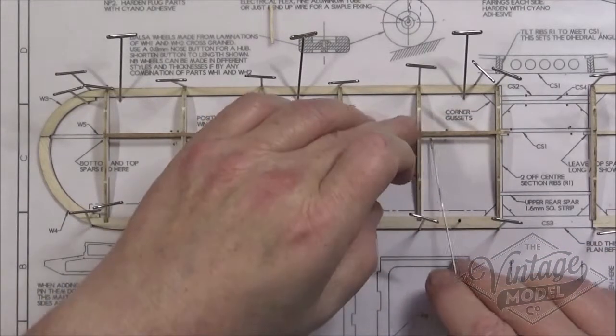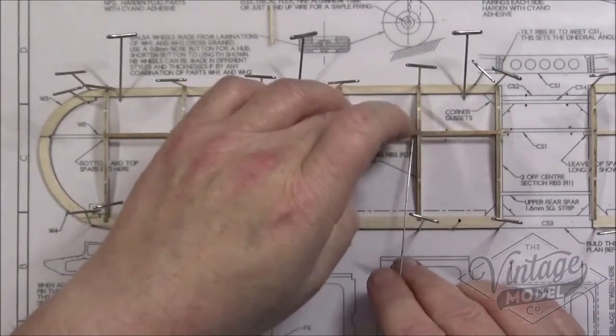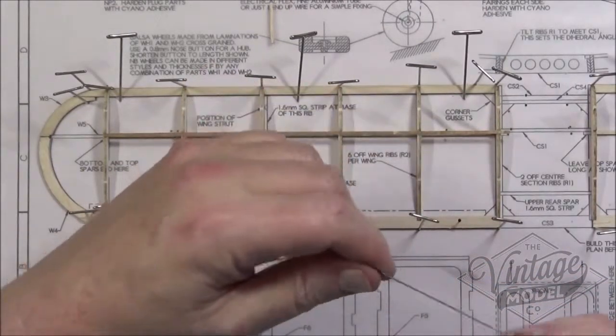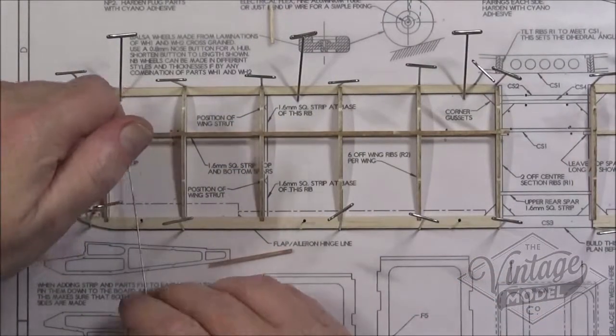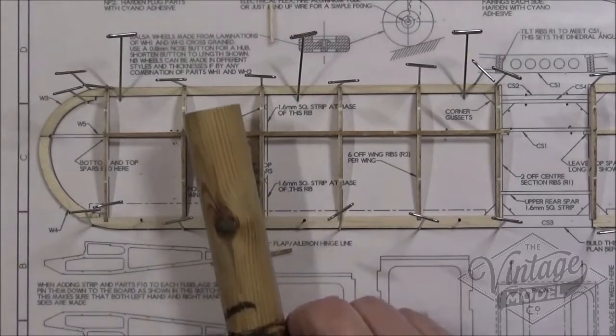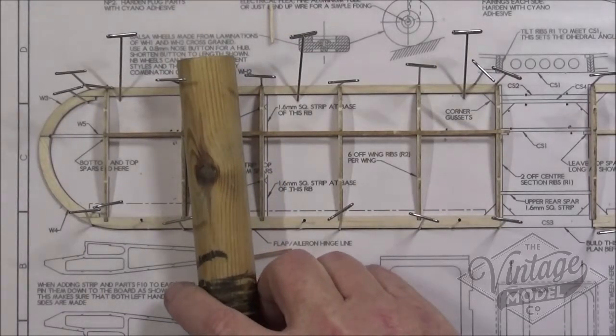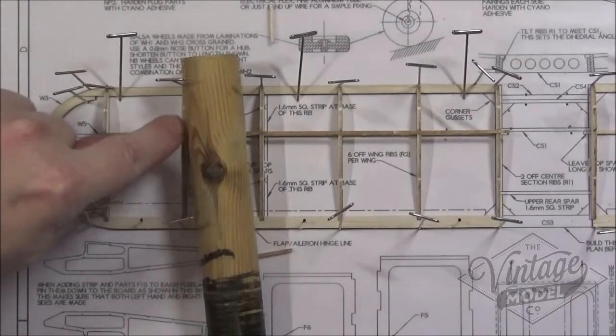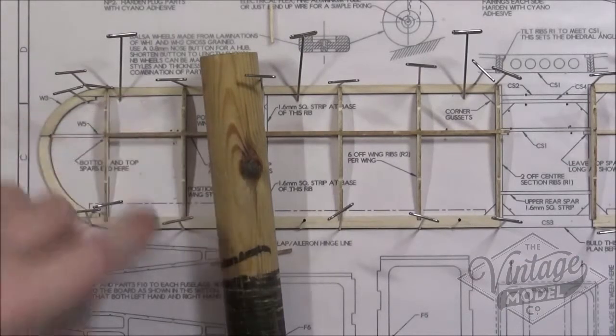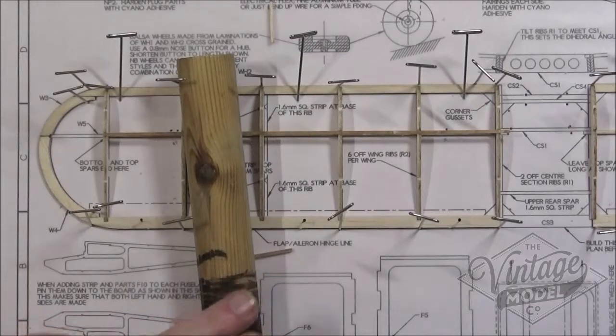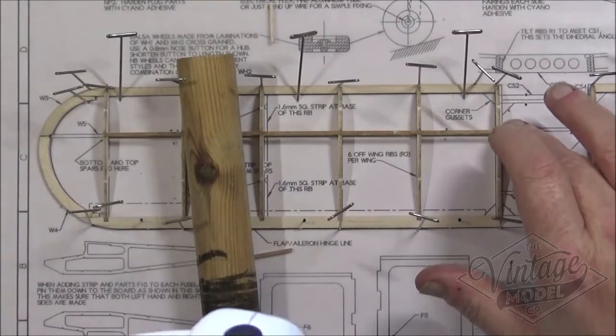Just to get off any excess glue especially from this side because this is going to join the center wings once I've made both wings up and all the glue is set. I'm just going to pop that on there because I noticed that on this rib for some reason the strip was trying to pop back out.